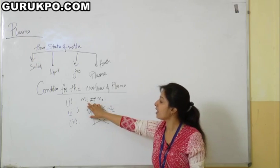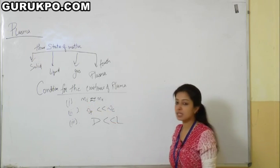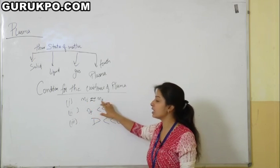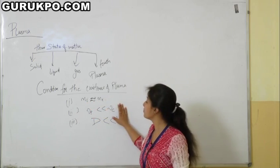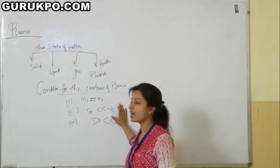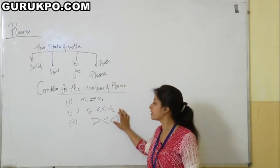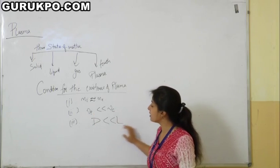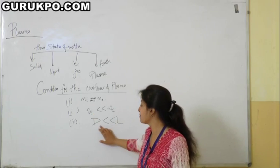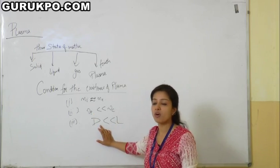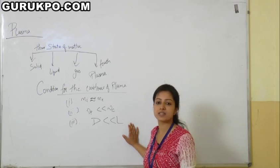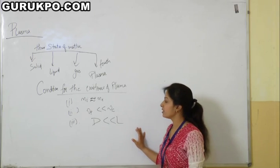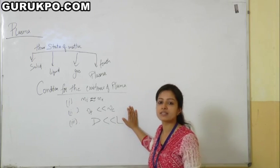First, the number of ions must be approximately equal to the number of electrons, that is Ni should be approximately equal to Ne. Second, the collision frequency must be greater than plasma frequency, that is mu_c must be greater than mu_p. Third, d must be less than l, that is the Debye length must be small compared to the linear extent of the plasma.